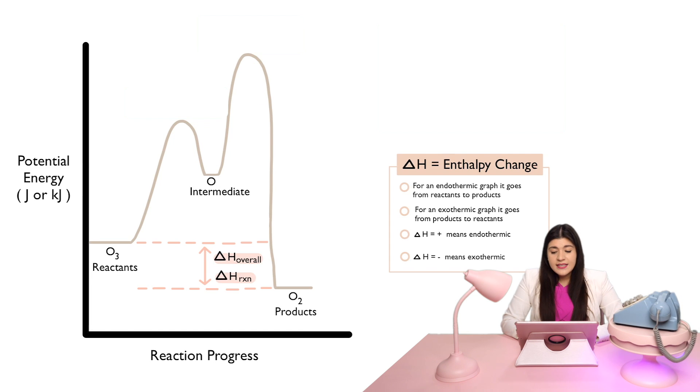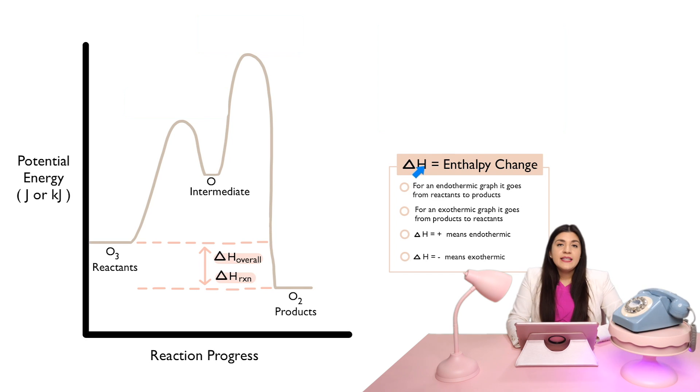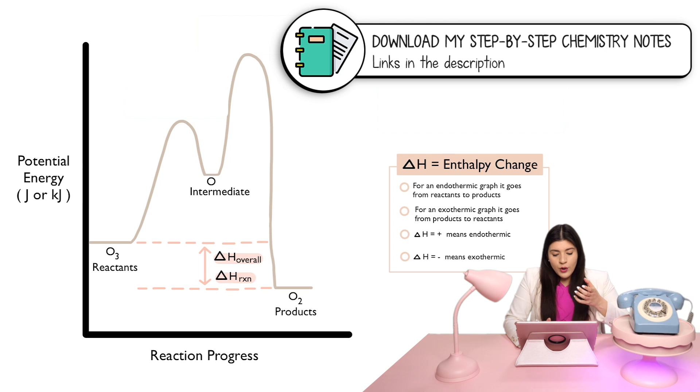Next thing we want to look at is our enthalpy change. So, remember what enthalpy essentially is talking about. Enthalpy or delta H just means the change in heat or heat transfer. Heat is being transferred. That's essentially what we're looking at. So, what we're going to look at here is the overall change, enthalpy change of our reaction.